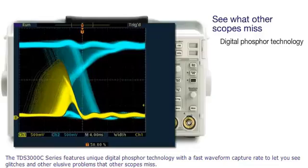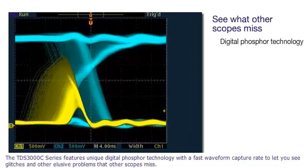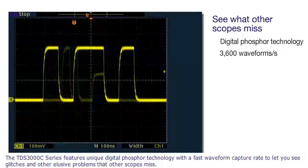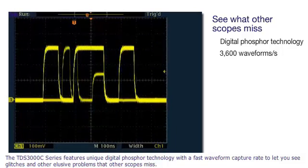The TDS 3000 C-Series features unique digital phosphor technology with a fast waveform capture rate to let you see glitches and other elusive problems that other scopes miss.